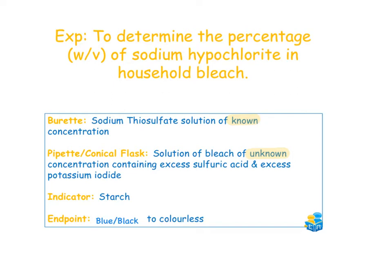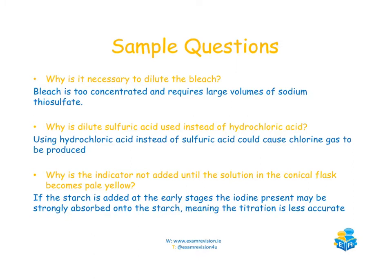Our indicator in this experiment will be starch and the colour change is from blue-black to colourless. Why is it necessary to dilute the bleach? The bleach is too concentrated if undiluted, meaning a large volume of sodium thiosulfate would be required for the reaction to go to completion. Hydrochloric acid is not used because it would cause chlorine gas to be produced. The indicator is not added until the solution becomes a pale straw yellow, because if starch is added too early the iodine present may become strongly absorbed onto the starch, making the titration less accurate.